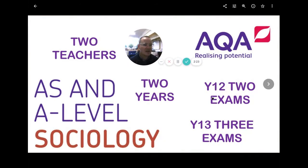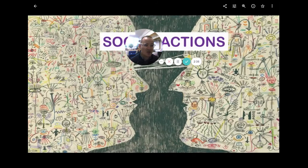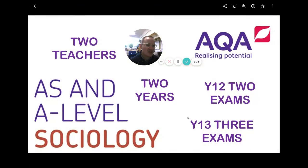This is what it looks like. So we will do an AS — that's a great thing to do. At the end of the first year, you walk away with an AS. But we hope you go through to A-Level because that's a meaningful grade that the universities are looking for. You'll have two teachers and it'll last for two years. At the end of Year 12, you get two public examinations. At the end of Year 13, you get three examinations.